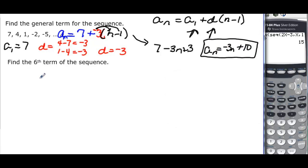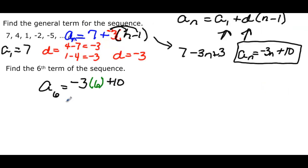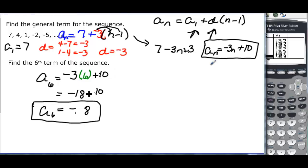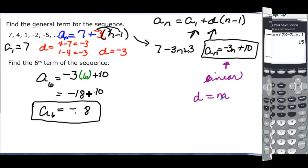The second part says find the 6th term. a₆ = -3(6) + 10 = -18 + 10 = -8. You may notice that these general terms look very linear, and the common difference is actually equivalent to the slope of a line.